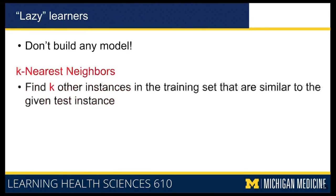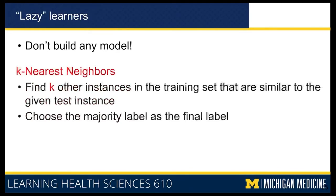The training phase itself is not doing anything except memorizing all the instances. Then when you get a new instance — when you really need to use that classifier in labeling a new instance — you are going to find what other instances are similar to this instance and what their label was. So you find K different instances from your training data set and then choose the majority label from this set of K most similar instances, and that majority label becomes your final label.